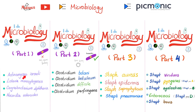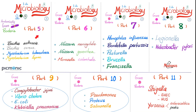In part 1, we talked about Actinomyces, Listeria, Corynebacteria, and Nocardia. In part 2, we discussed all the Clostridia. In part 3, we talked about Staph aureus, Staph epidermidis, Staph saprophyticus, and Strep pneumoniae. In part 4, we discussed Strep viridans, Streptococcus pyogenes, Streptococcus agalactiae, Enterococci, and Streptococcus bovis, currently known as Streptococcus gallolyticus.